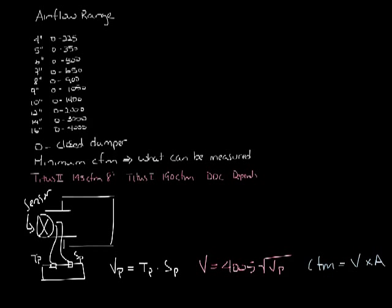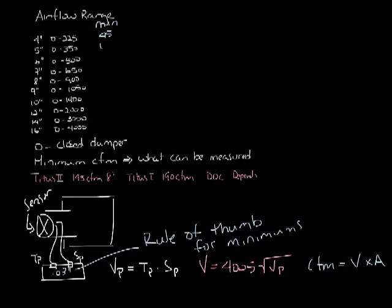If you remember, this is velocity equals 4005 times the square root of the velocity pressure, and then it can use that to calculate the CFM, which is velocity times area. So a good rule of thumb is that the pressure transducer in a controller needs about 0.03 inches of pressure differential.